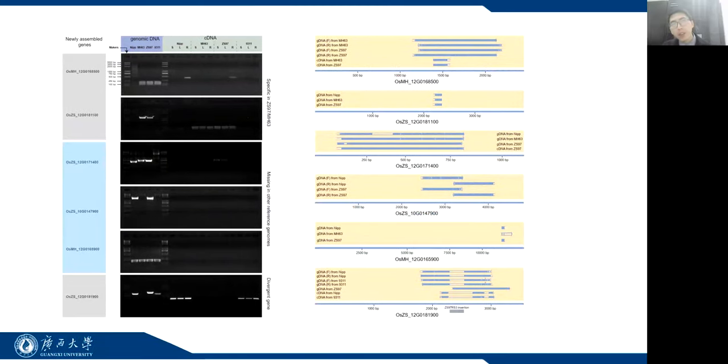We detected 40 and 25 specific genes in the centromere regions of Zhenshan and Minghui, respectively, which were not found in other rice reference genomes.